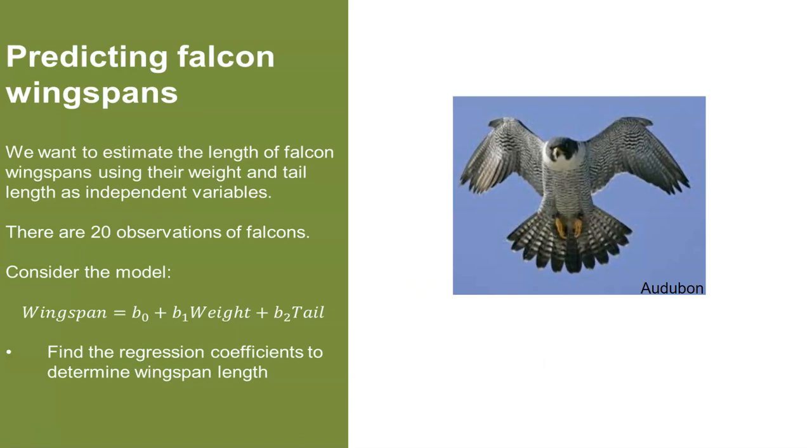So we're going to go through some examples where we do this. Let's say we want to calculate or predict the wingspan of falcons. We want to estimate the length of falcon wingspans using their weight and tail length as independent variables. We have 20 observations of falcons, and we can think about our model looking like this.